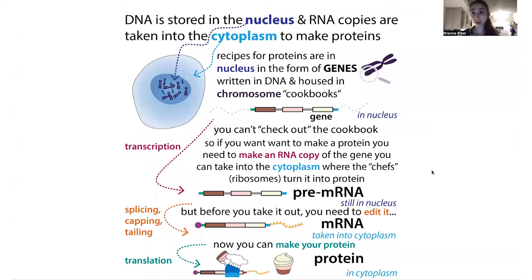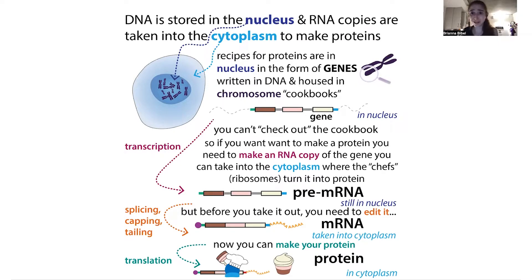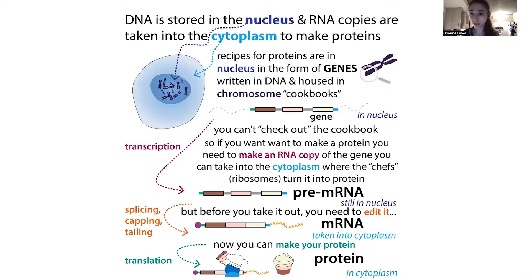Say your cell wants to make a specific protein. The instructions for making that protein are really precious, because if you mess with those, you'll make mutated proteins every time you want to make that protein. The permanent instructions — the original copy, the DNA gene — are going to be stored tightly in a protected compartment of your cell: the nucleus.